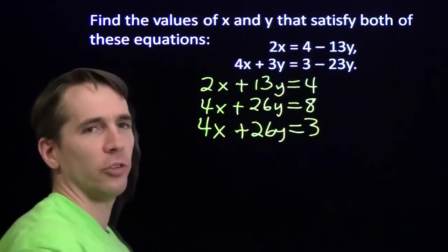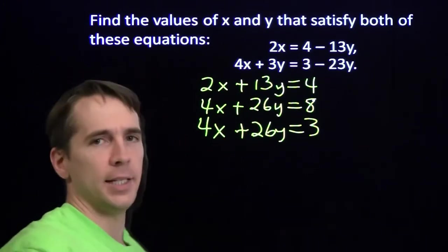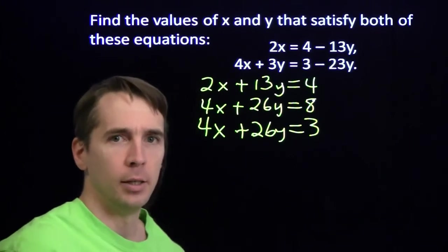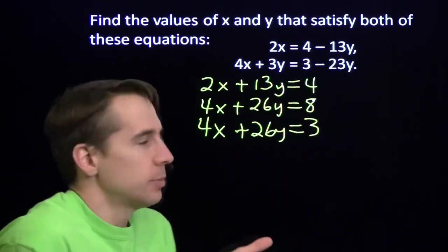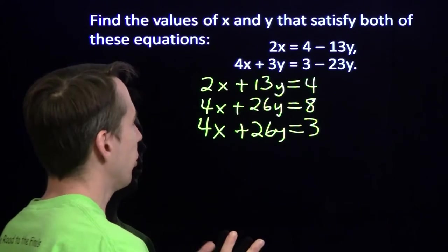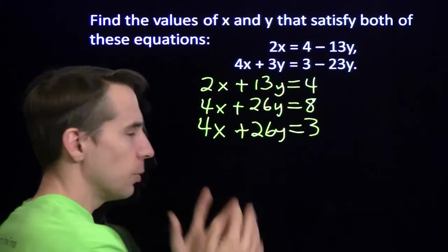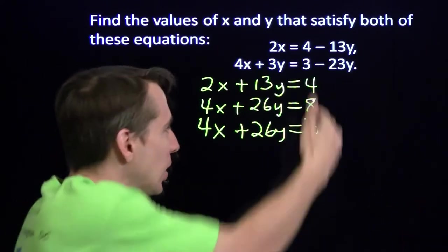It's impossible for 4x plus 26y to be both 8 and 3. It can't be both values. It has to be, you know, you can only have one value for 4x plus 26y. And once you pick x and y, you just get one thing, whatever it comes out. You can't get 8 and 3.